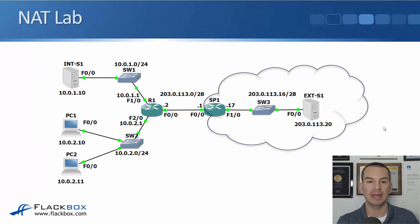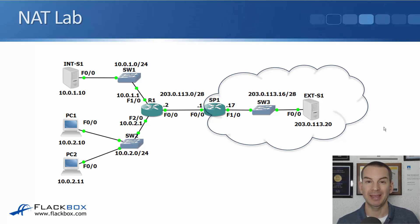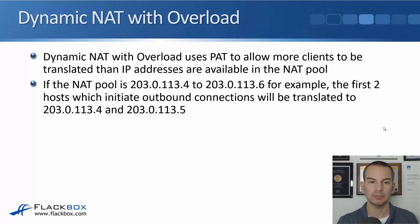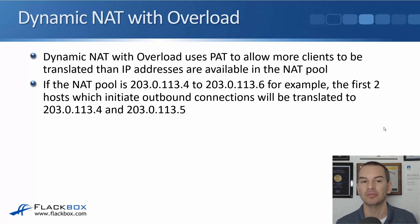We're using the same lab topology again. I've got my hosts on the inside on the 10.0.2.0/24 subnet. I don't need to use PAT for my internal server because I've got a permanent fixed static NAT translation for that. But for my normal PCs, I've got probably loads of PCs on the inside and I don't have enough public IP addresses to give them all their own one, so I'm going to use PAT so they can all get internet access at the same time. Dynamic NAT with overload uses PAT to allow more clients to be translated than IP addresses are available in the NAT pool — it's really just a type of PAT, not a different thing.